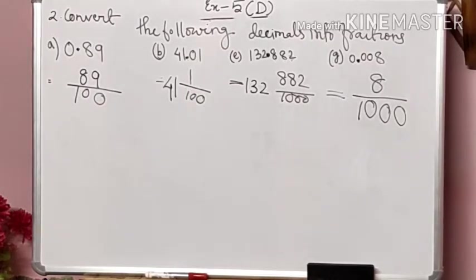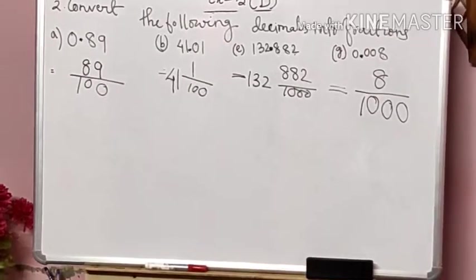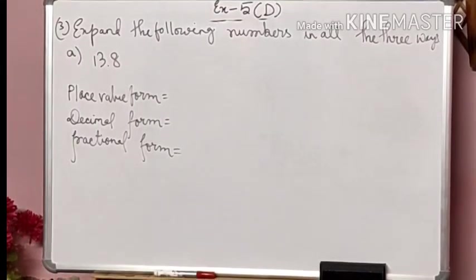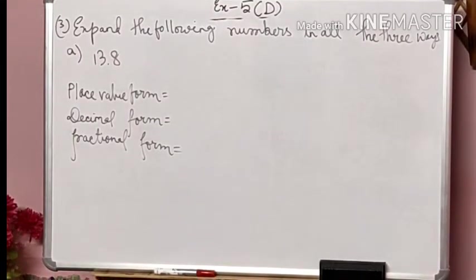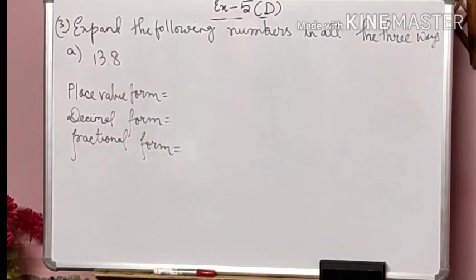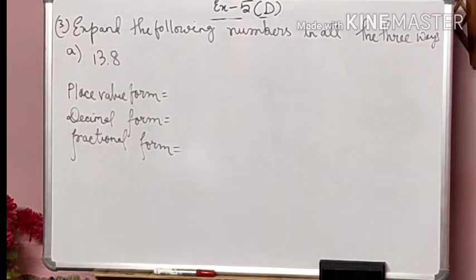Now we are going to do question number 3. In question number 3, what it says: expand the following numbers in all three ways. That means we have to expand whatever numbers are given in three ways. What are these three ways? You always have to expand these numbers into: first, the place value form; second, the decimal form; and third, the fractional form. All these forms we have discussed already, so we just have to write them here.